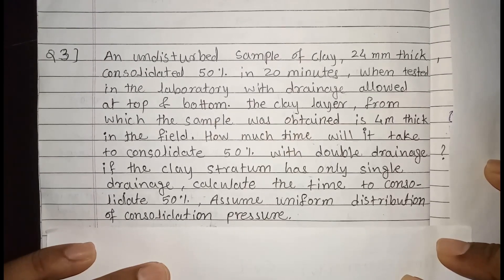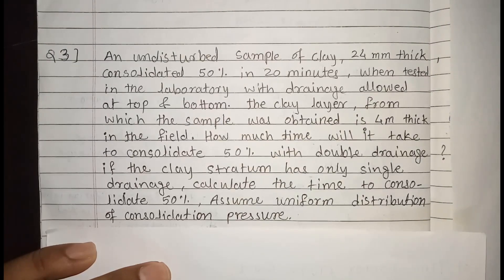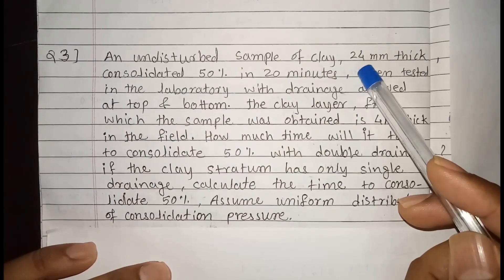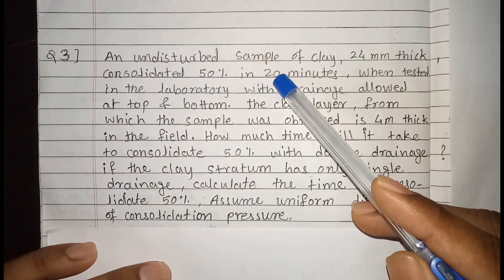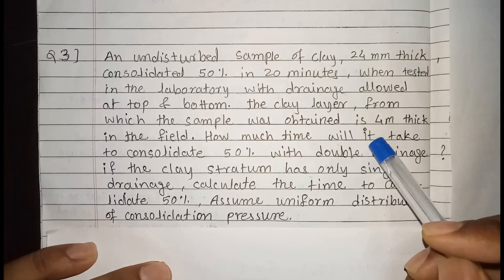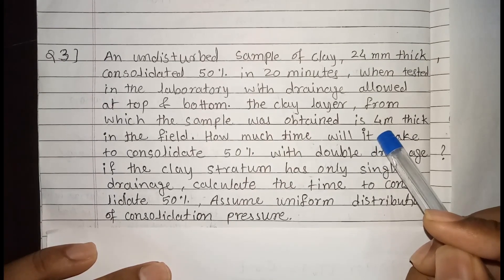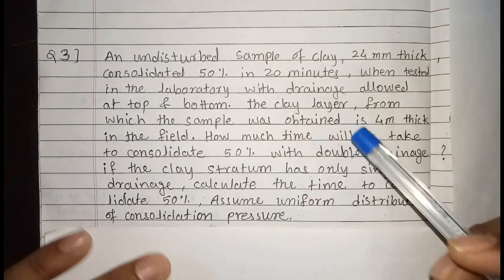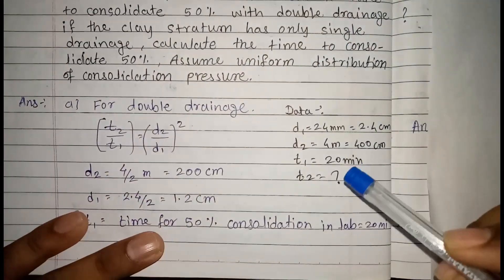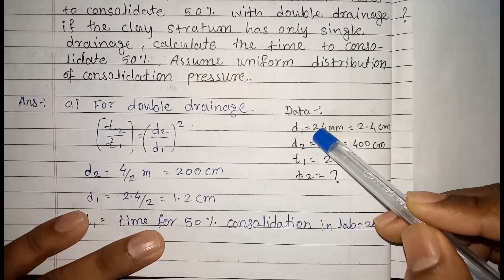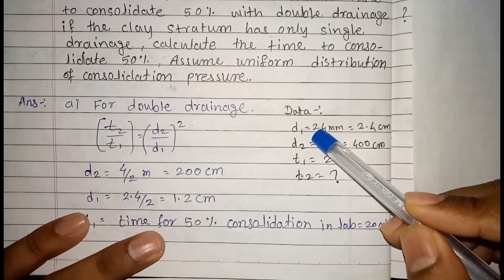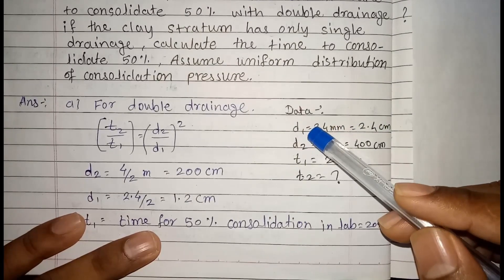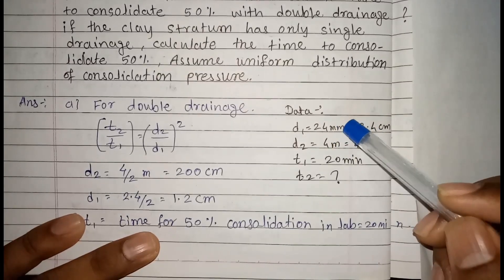The soil sample is taken from the field and consolidated in the laboratory. The thickness of the soil sample is 24 mm, and for 50% consolidation it took 20 minutes. For the clay stratum in the field having a thickness of 4 meters, we need to find the time required for 50% consolidation. D1 is 24 mm, the laboratory sample thickness. D is the drainage path, and for laboratory drainage the path is double.